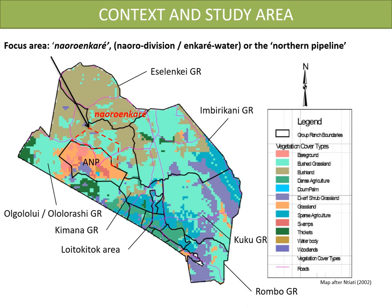Administratively, group ranches are collective ranches where resources are considered as common property. They include all those who have a membership card issued during the years of registration. They are considered as animal production systems where a group of people jointly hold title to the land for their livestock and the achievement of joint management of land and resource. Still, water is vested in and held by the national government in trust for the people of Kenya. In this presentation, we will focus on the northern part of the ecosystem located in the Olgolului-Ororashi group range, called Nauru Nkare — Nauru for division and Nkare for water — by the population, and the northern pipeline by NGOs and local government organizations.